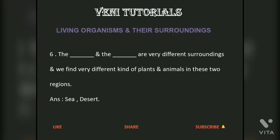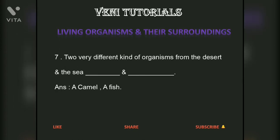The sea and the desert are very different surroundings, and we find very different kinds of plants and animals in these two regions. Answer: Sea, Desert. Two very different kinds of organisms from the desert and the sea — Answer: A camel and a fish.